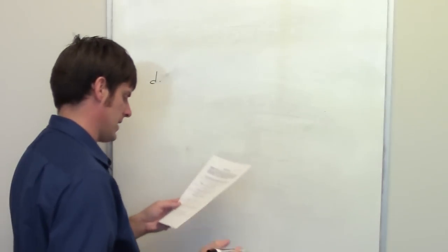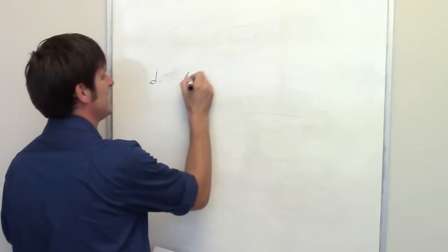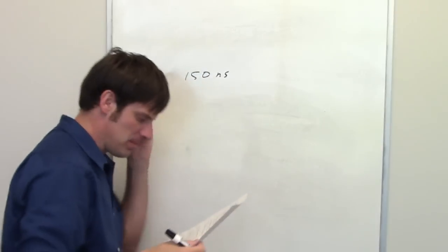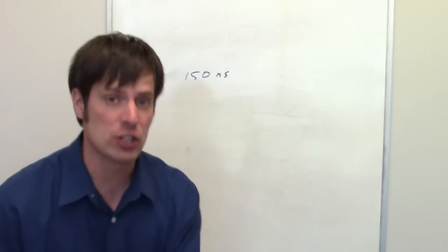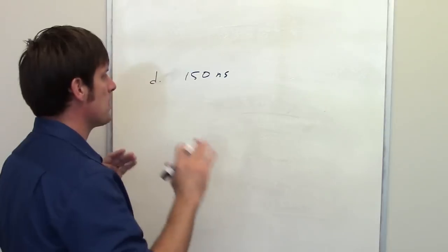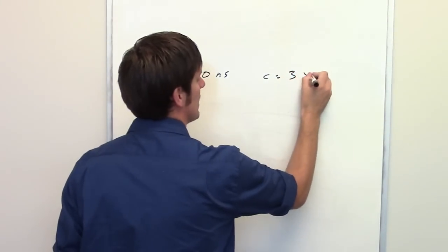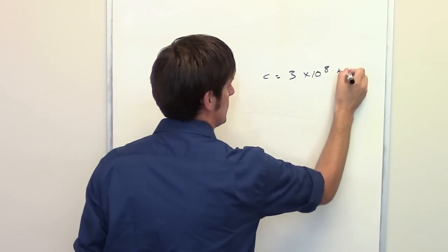In Part D of this question, we were asked, what distance does EM radiation travel in 150 nanoseconds? We have to remember that all EM radiation travels at the same speed. It doesn't matter if you're talking about radio waves or gamma waves. All EM radiation travels at the speed of light, which is 3 times 10 to the eighth meters per second.